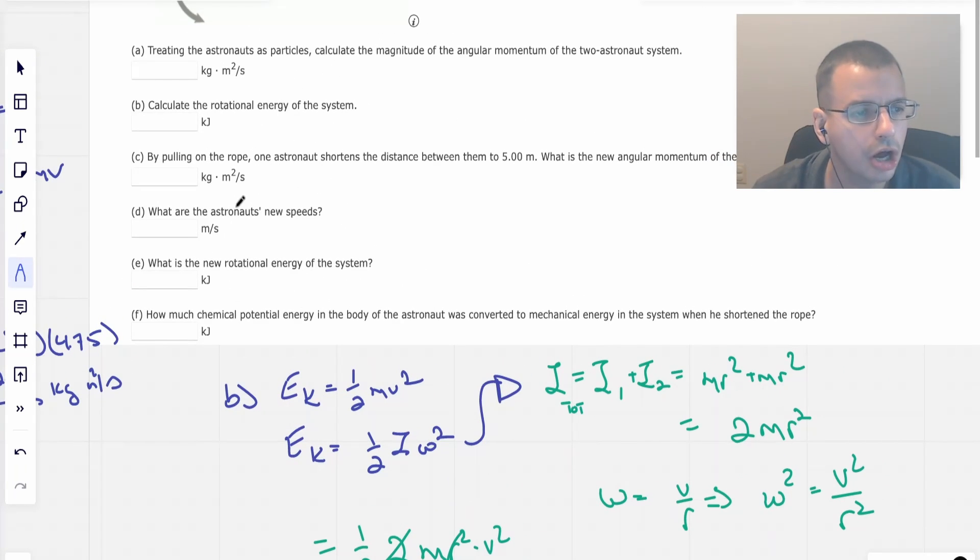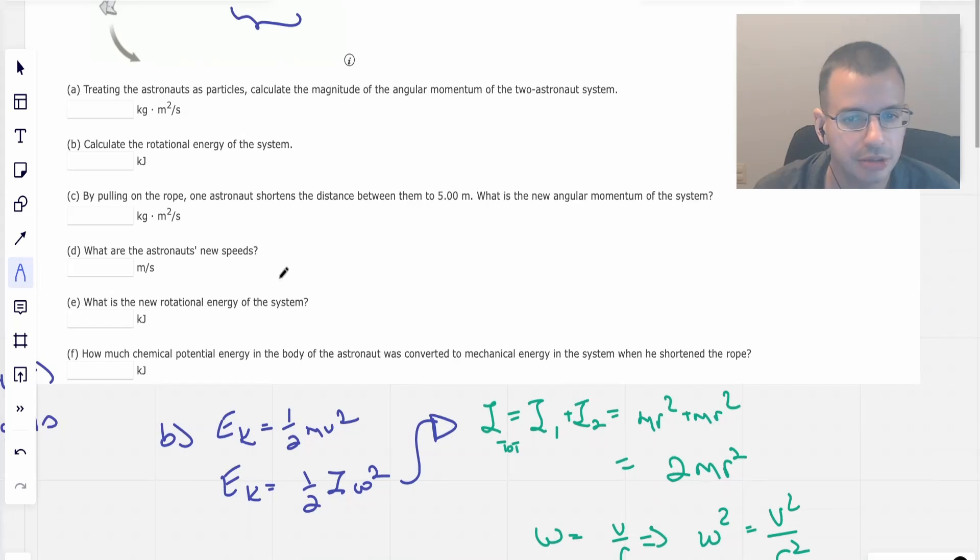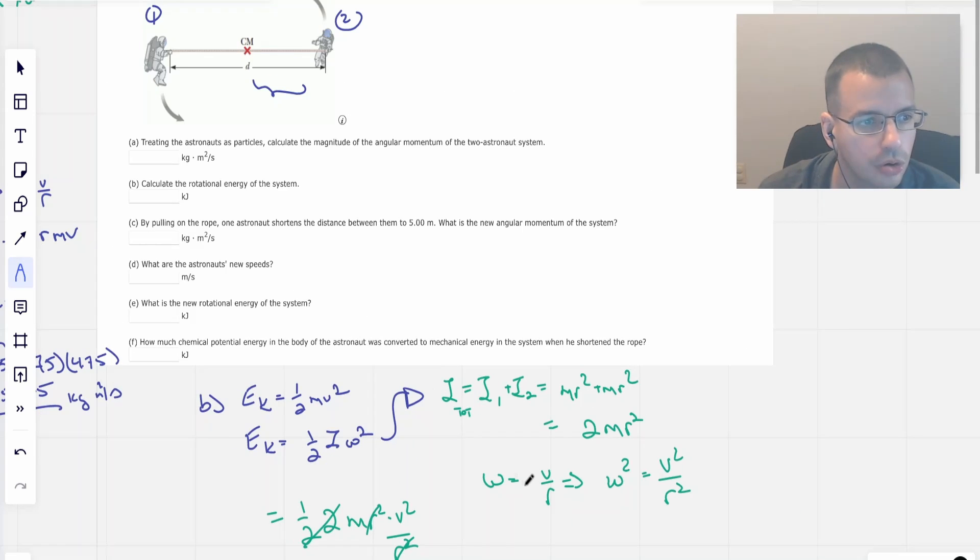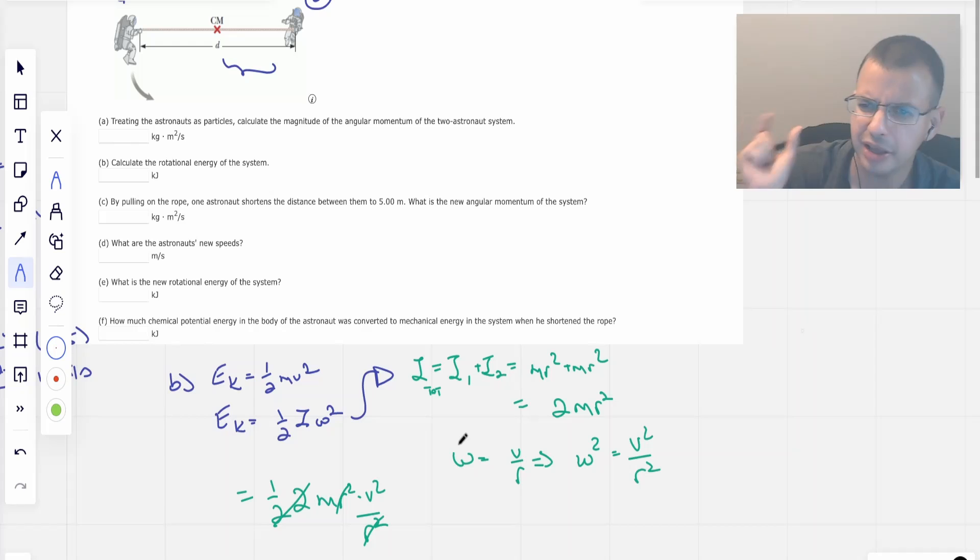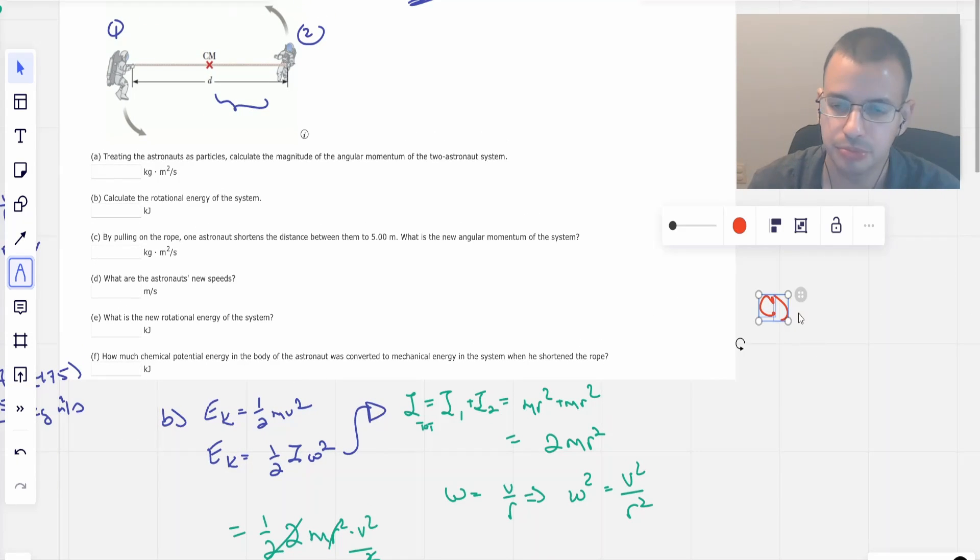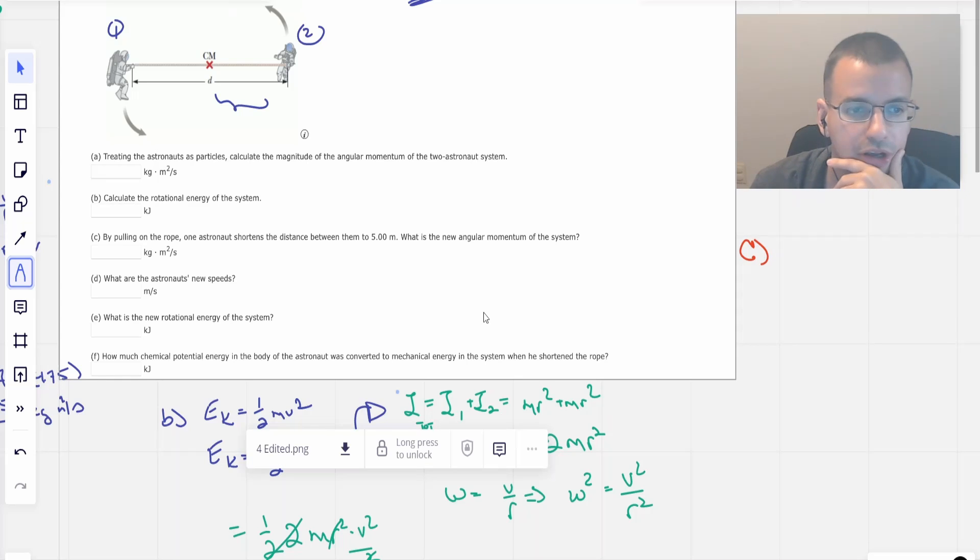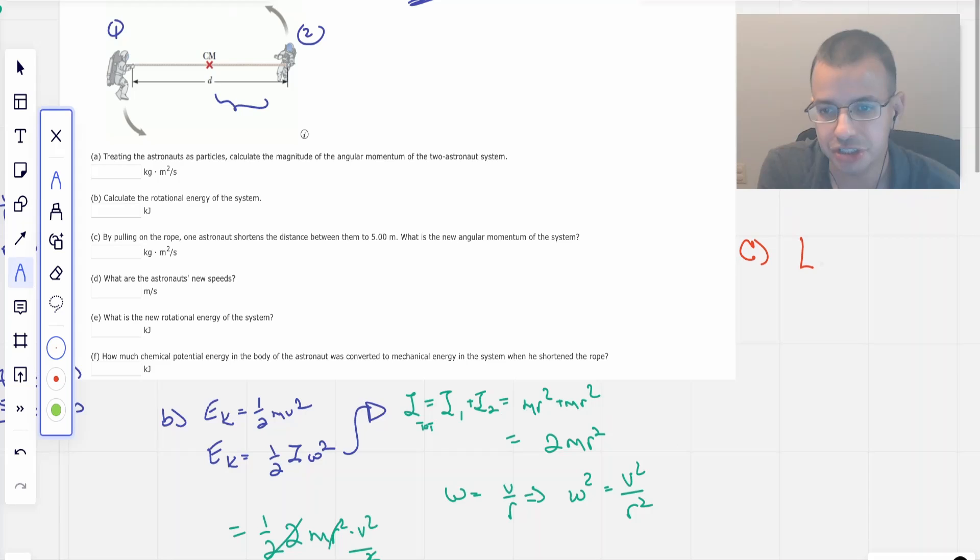By pulling on the rope that one astronaut's distance between them to 5 meters, what is the new angular momentum of the system? So one nuance here that you might kind of get caught up in is, well, it's one astronaut doing the pulling, therefore it's not going to be symmetrical. That is a nuance we're not going to worry about. So what it's basically saying is that we have an initial angular momentum, we have a final angular momentum, and they are the same.